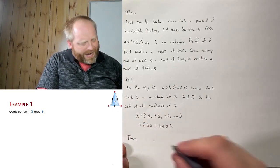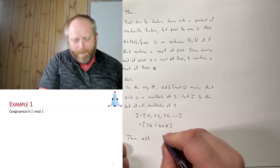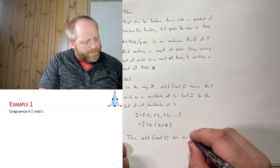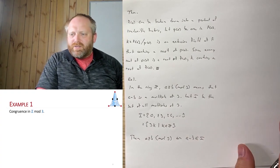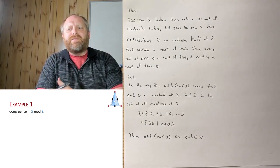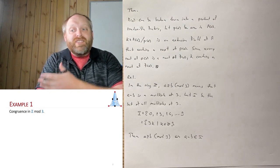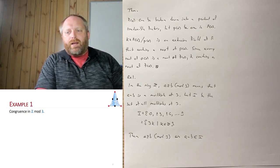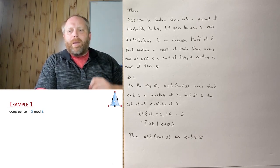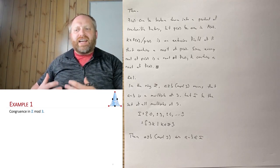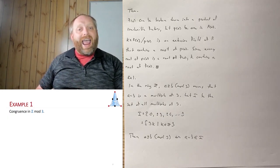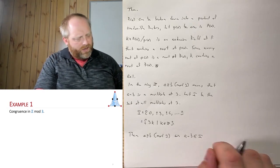We can say that A is congruent to B modulo 3 — this just means that A minus B is an element of the set I. Not only is it a set, but I want to show that this is in fact a subring. So let's go through the subring test. We're taking all the multiples of 3, elements in Z, and to be a subring it has to satisfy two properties: it must be non-empty, and closed under subtraction and multiplication.